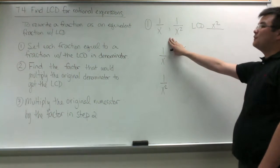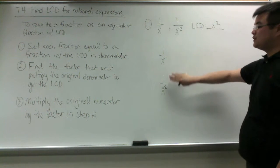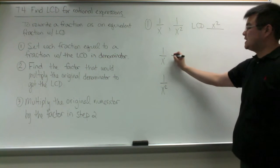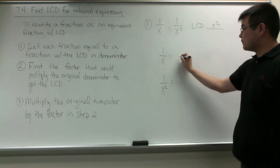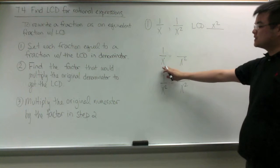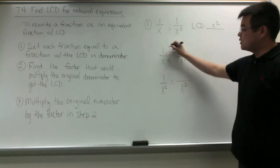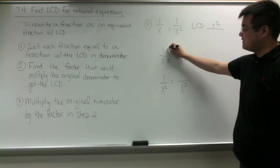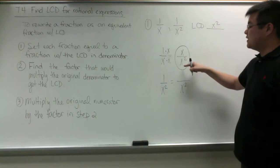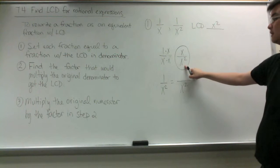Looking at our first example from before, the LCD was x squared. In order to write these two fractions as equivalent fractions with x squared as the LCD, we set each one equal to a fraction with the LCD in the denominator. We ask ourselves: what times x would give me x squared? That would be x. So we multiply the numerator by that same factor — 1 times x is x. So x over x squared is the equivalent fraction of 1 over x.